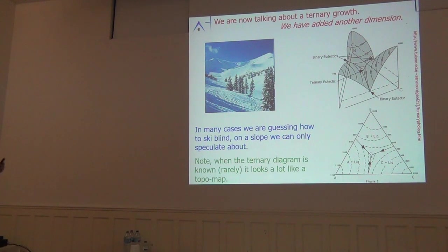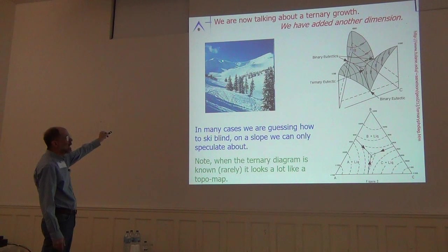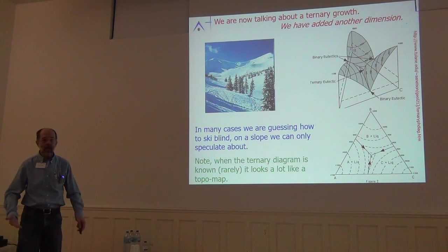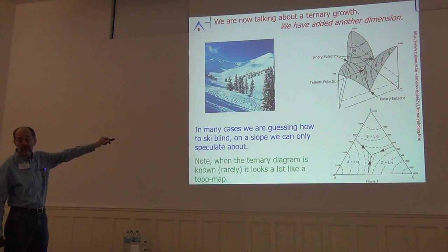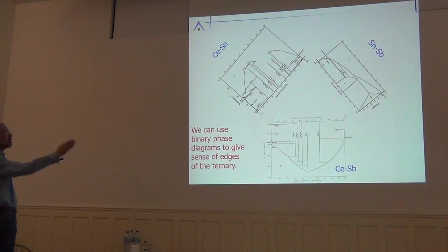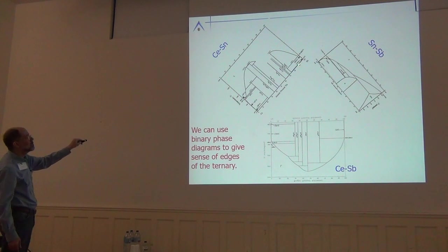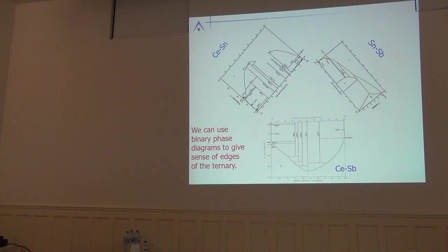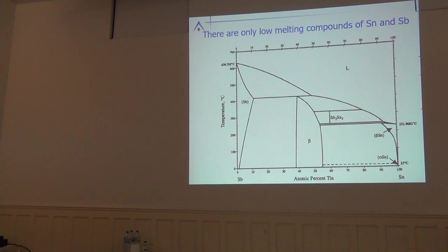In essence, working with an unknown ternary is like parachuting down onto the Alps at midnight and skiing in the dark — you're hitting a liquidus surface and rolling down it to see what happens. We're not completely blind, because we have the binary phase diagrams on the edges of the triangle: cerium-antimony, tin-antimony, and cerium-tin binaries.